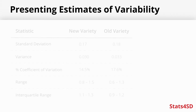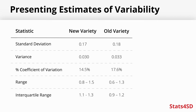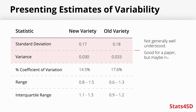When thinking about variability, the concepts most commonly talked about are standard deviation and variance. These have very useful statistical properties, but they're often quite poorly understood as concepts for a more general audience. For a paper, these should certainly be presented. But in a presentation, there are maybe better ways of dealing with it.